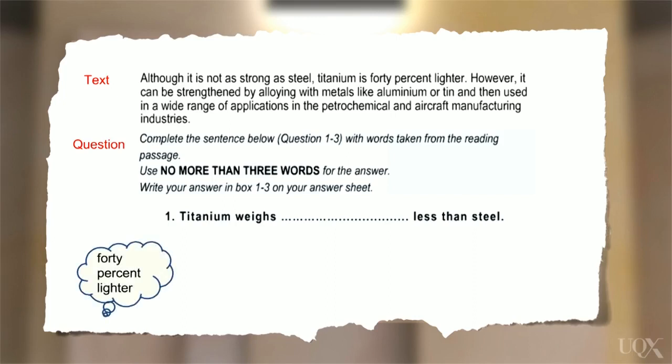Forty percent lighter? Lighter less than? That's not right. We have two comparatives there. Forty percent less? Hmm, sounds good. What about this one? Forty. Forty less? Forty what less? We need a number or a measurement.